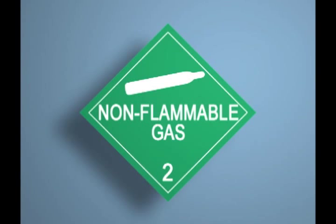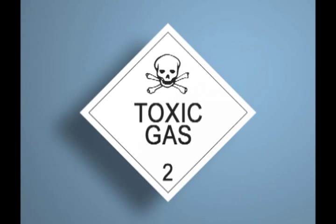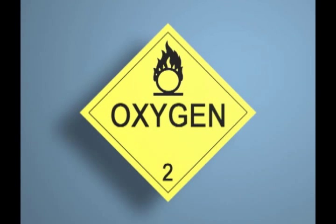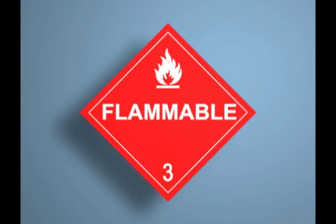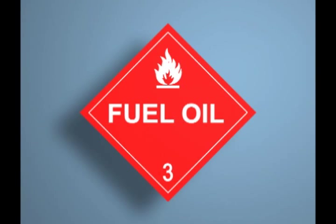Class 2 gas placards use four different colors: non-flammable gas placards are green with a cylinder symbol; flammable gas placards are red with a flame symbol; toxic or poison gas placards are white with a skull and crossbones; and oxidizer gas placards are yellow with a flaming circle. Class 3 flammable liquid placards are red with a flame symbol with the words flammable, combustible, or flammable liquid written within the placard. In some cases, product names such as gasoline or fuel oil will be written on the placard.